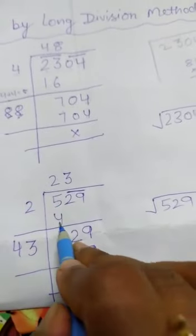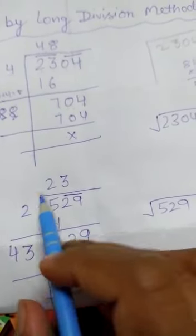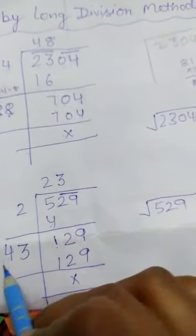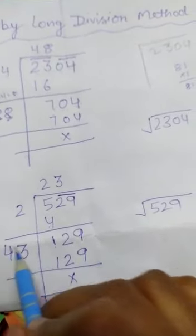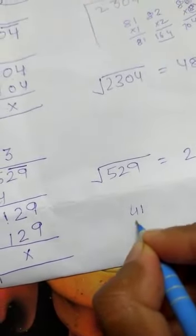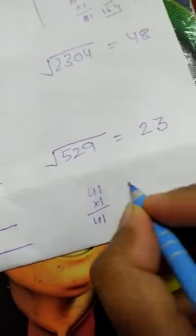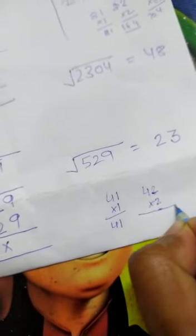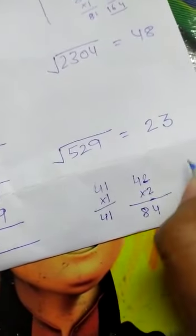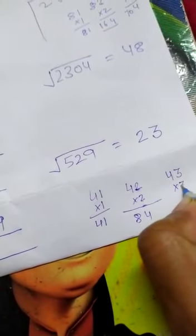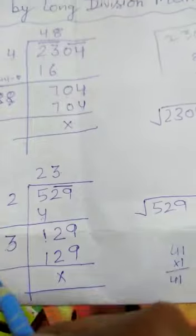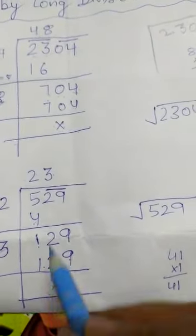We write 2, and 2×2=4. Then 5 minus 4 equals 1. We add 2 plus 2 to get 4, not multiply. Now with 4, we bring down 29 to get 129. We check: 41×1=41, 42×2=84, 43×3=129. So 3 is the next digit — we write 3 here and 3 here.